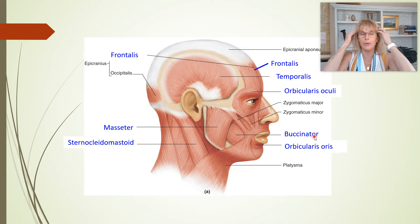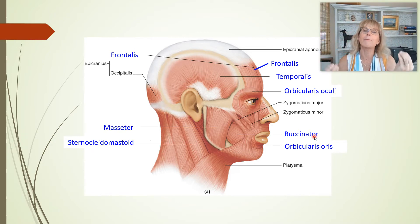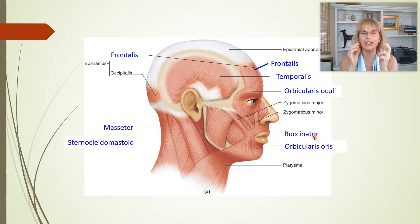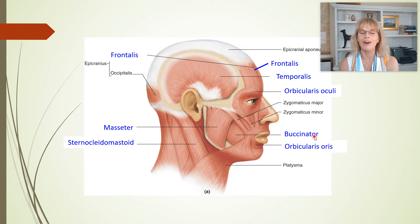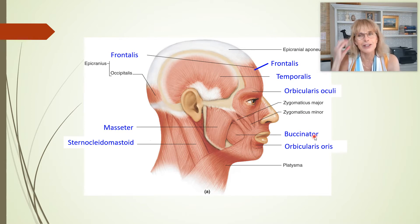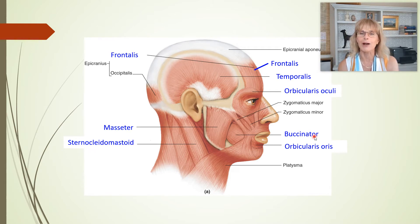Then we've got the temporal bone, and the muscle here is the temporalis. The temporalis is one of the muscles that closes your jaw. If you ever made your dad mad and he was gritting his teeth so he wouldn't say something he regretted, you could see this muscle kind of bulging. That is the temporalis.